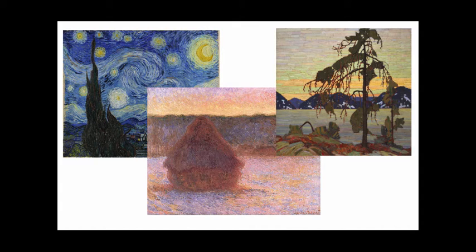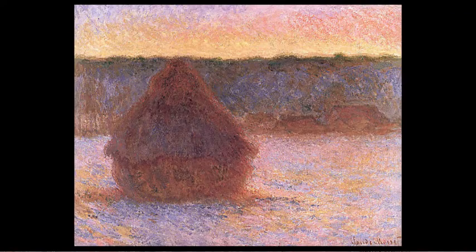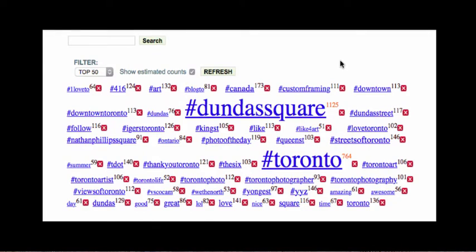If we look at works like Starry Night, Haystack, and The Jack Pine, up close we can view each individual brushstroke, but by stepping back we see all the elements working together to create a complete picture. Text analysis is similar in this approach.